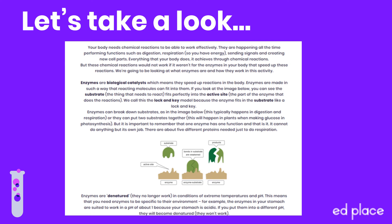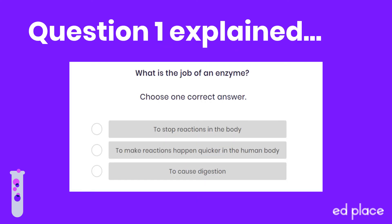Let's have a look at some of the questions you might have found more difficult. Question one asked: what is the job of an enzyme? Your choices were to stop reactions in the body, to make reactions happen quicker in the human body, or to cause digestion. Whilst we've talked about digestion as our example, it isn't the only job of enzymes. The job of enzymes is to make reactions happen more quickly in the human body — and any other living thing — by lowering the activation energy.